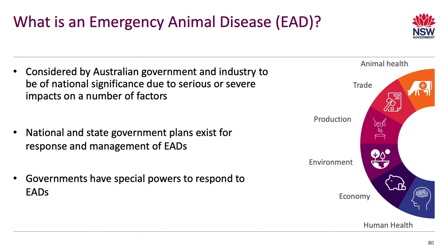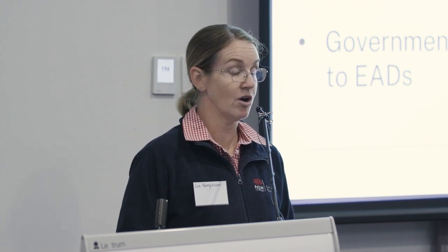So what is an emergency animal disease? It's a disease considered by the Australian government and industry to be of national significance due to serious or severe impacts on a number of factors. It's likely to have significant effects on animal health, potentially resulting in livestock deaths, production loss, and in some cases human health and the environment. They have an impact on our ability to trade and negatively impact the economy — and if we have foot and mouth disease, that's quite a big understatement.